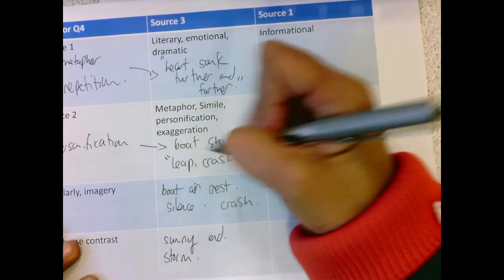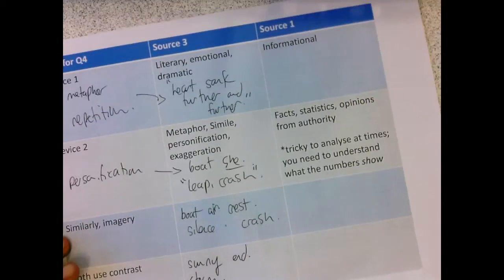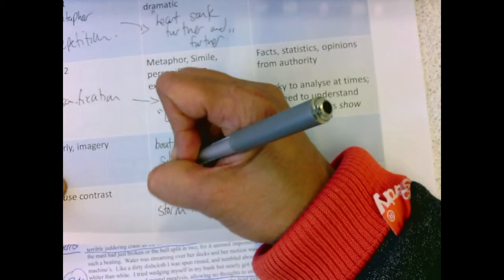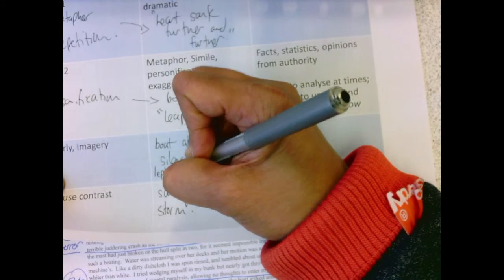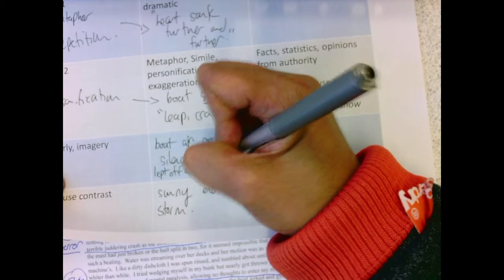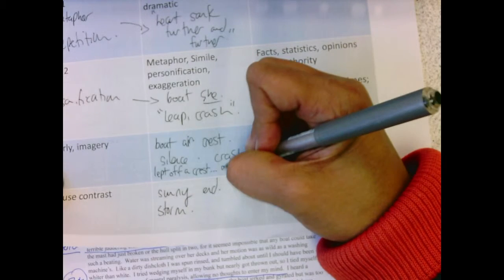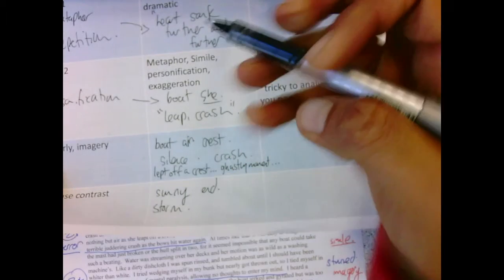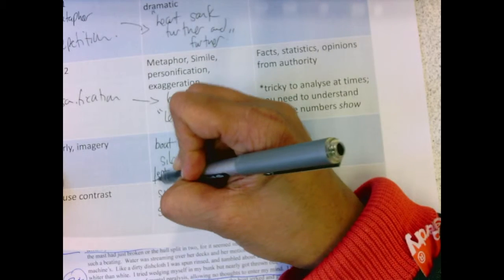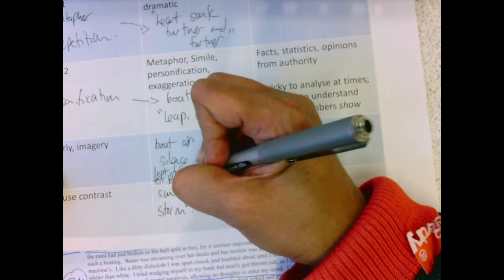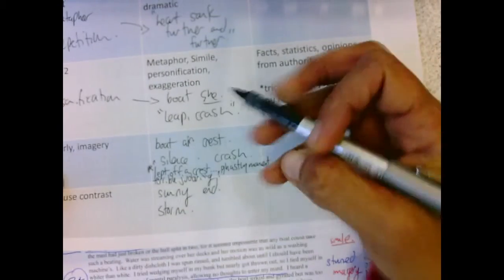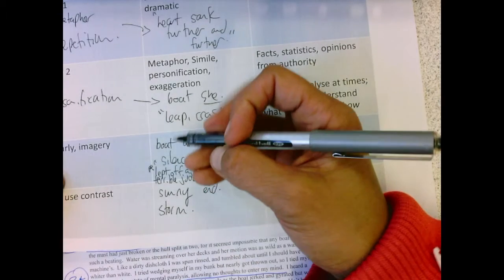HeartSank further and further. Boat is a she. Leap. Crash. The quote about the boat in the air, it goes like this. It's leapt off a crest, ghastly moment, terrible juddering, crashing. Okay? There's my quote. Sorry, it isn't as legible as I wished.